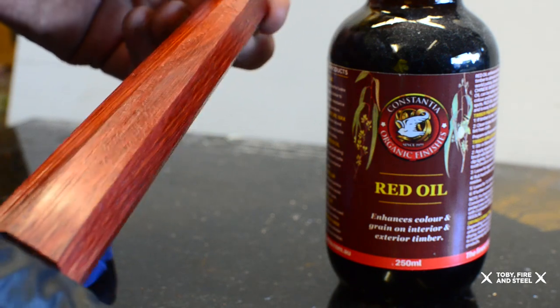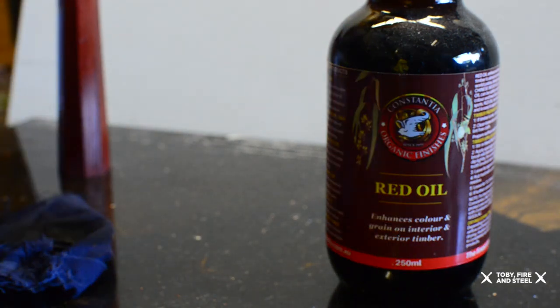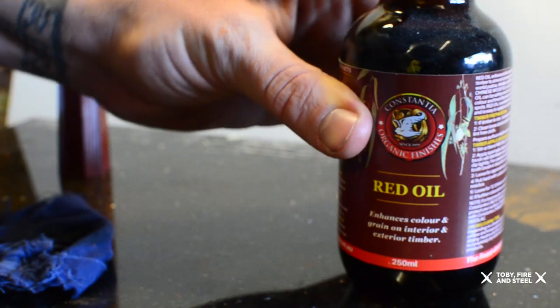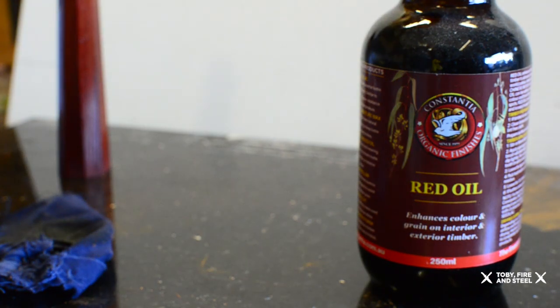And just to add to it, smells incredible, this stuff. The workshop smells amazing all the time. In fact, I use this, not the red oil but the Chinese oil, on all my blocks before I put them on my website. So when I just sand them down to like a 240 grit and then put that on there, you get to see what it's going to look like when it's finished.